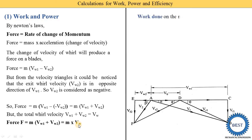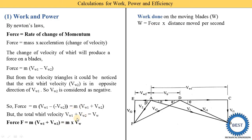Now we find out the equation of work done on the moving blades, denoted as W. Work done equals force times distance moved per second. Force is m times Vw, and distance moved per second is the blade velocity Vb. So work done equals m times Vw times Vb, with units of Joules.